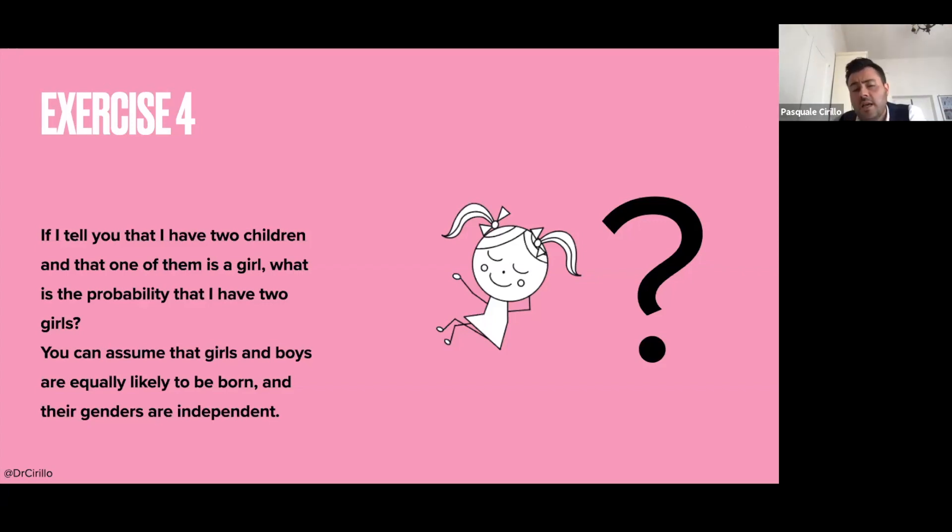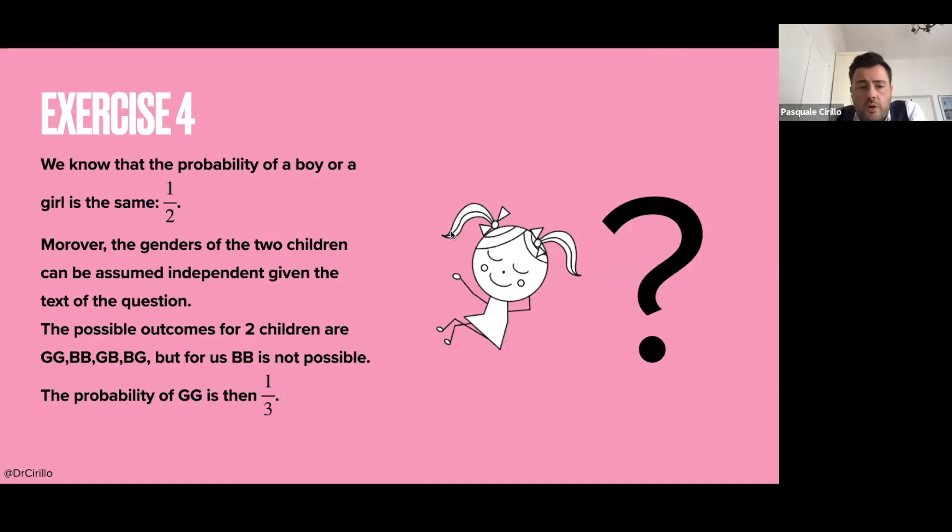Now, this is a nice exercise. Why? Because the solution is the following. And if you think about the solution is not particularly complicated. But if you have also considered the next exercise, which is exercise five, then you see that it is tricky. Because I can do the following. So we know that the probability of a boy or a girl is the same. And the two genders are independent. So there is not any problem with that.